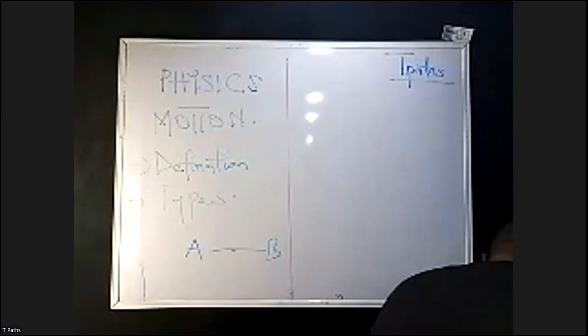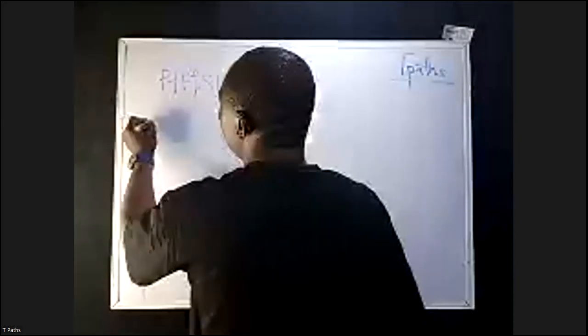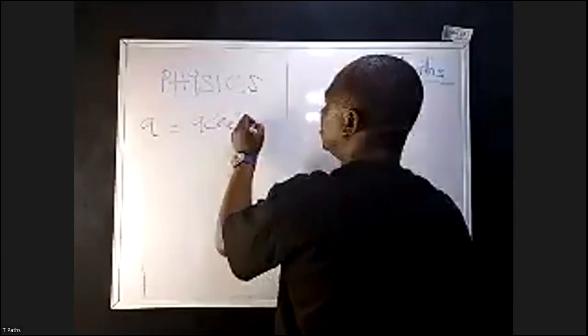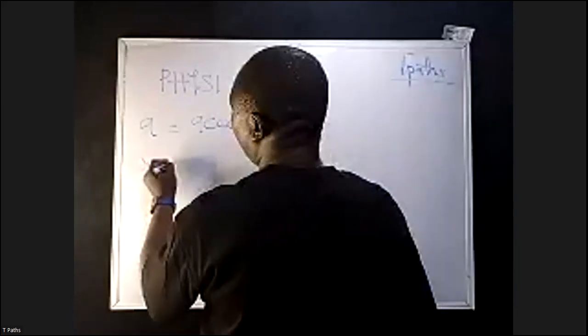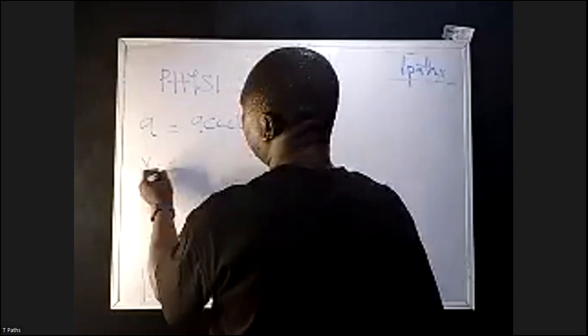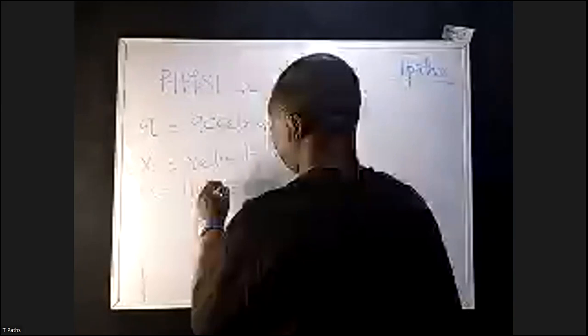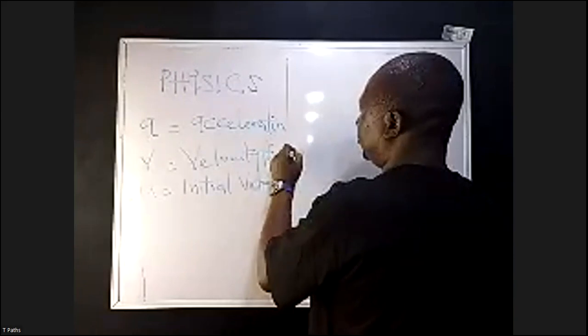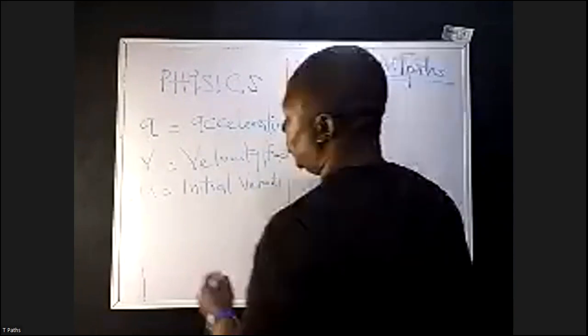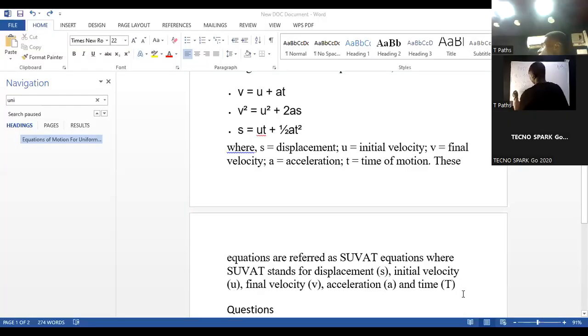When you see your A, your A is acceleration. Your V is velocity — final velocity. And you have your T; T is time.